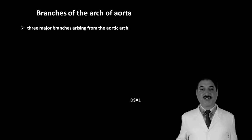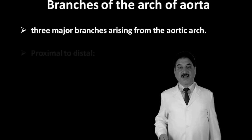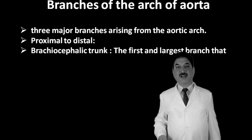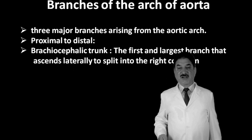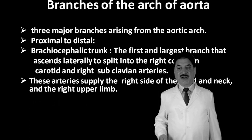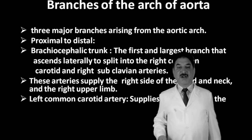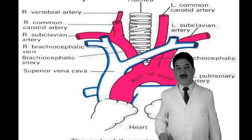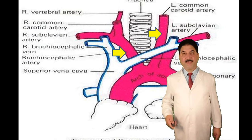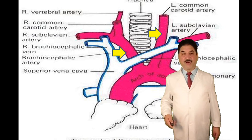There are three major branches arising from the arch of the aorta. From proximal to distal: first, the brachiocephalic trunk — the largest branch — which ascends and divides into the right common carotid and right subclavian arteries, supplying the right side of the head, neck, and right upper limb. Second, the left common carotid artery, which supplies the left side of the head and neck. Third, the left subclavian artery, which supplies the left upper limb.